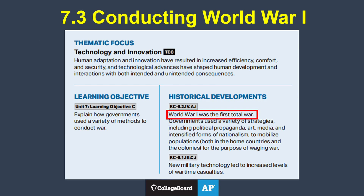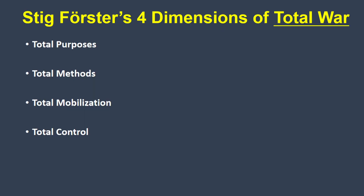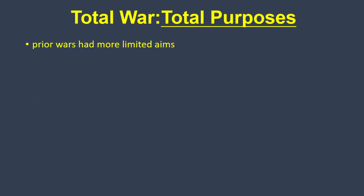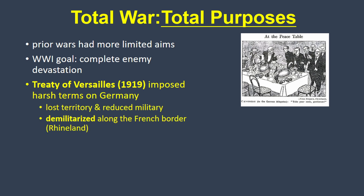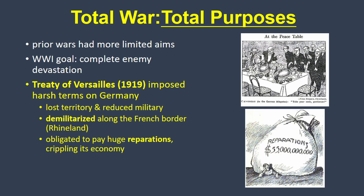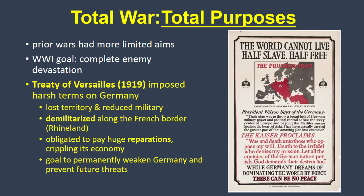World War I was the first total war. Historian Stieg Furster identified four main categories of total war. First, total purposes. Many of the previous European conflicts had limited aims, but as World War I dragged on, the goal increasingly became the complete devastation of the enemy, making them unable to ever be a threat again. This can be seen in the terms of the Treaty of Versailles of 1919, the main treaty ending the war in Europe. Germany was forced to accept terms that not only took away territory, but drastically reduced its military. It was also obliged to pay astronomical reparations to its former enemies — an amount that would surely devastate the German economy. This was the whole point: to forever weaken Germany so that it would never again pose a threat to world peace. Seems like that didn't work out so well.